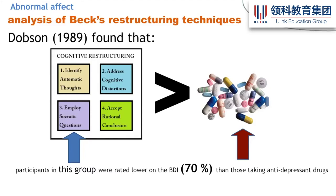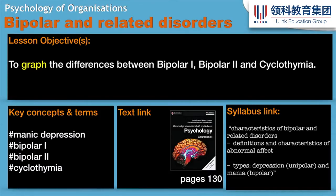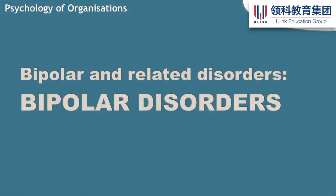Moving on to what used to be called manic depression — now called bipolar. We can differentiate several bipolar disorders. Three we'll talk about here are bipolar one, bipolar two, and cyclothymia. The difference between bipolar disorders and unipolar depression is obviously the 'bi' — there are two states. There is a high as well as the low we just spoke about. So we know about the diagnostic criteria for depression, but what is mania? Let's do a simplified version.